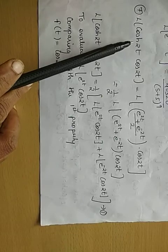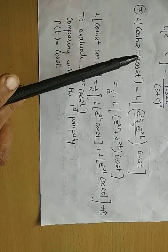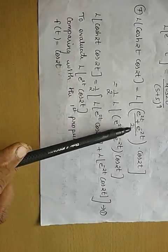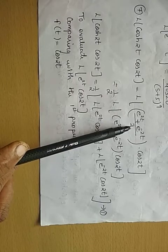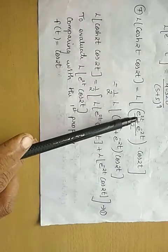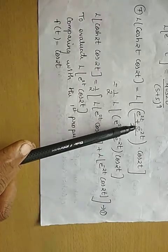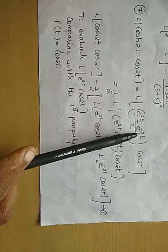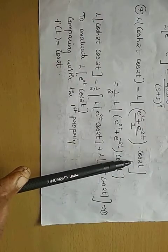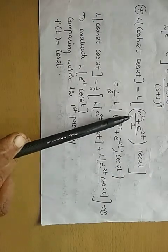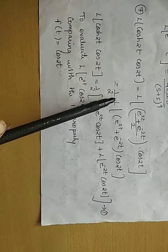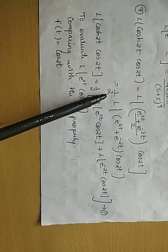As we know, cos hyperbolic theta equals e raised to theta plus e raised to minus theta, all divided by 2. Substituting theta with 2t, we get e raised to 2t plus e raised to minus 2t, divided by 2, multiplied by cos 2t. The factor of 1/2 is brought outside the L operator.